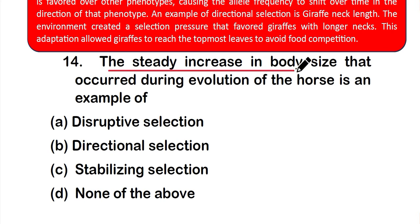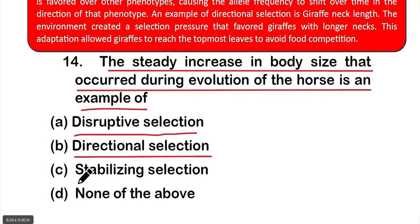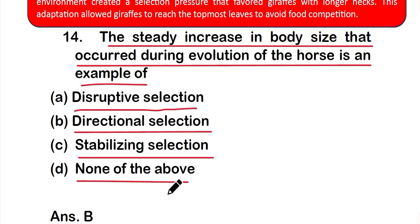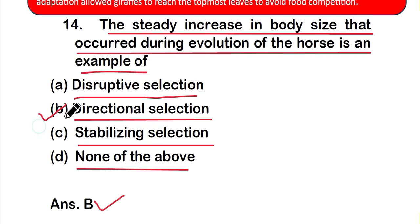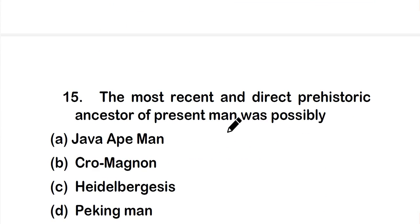Question 14: The steady increase in body size that occurred during evolution of the horse is an example of — option A: disruptive selection, option B: directional selection, option C: stabilizing selection, or option D: none of the above. The correct answer is option B — directional selection. The steady increase in body size during the evolution of the horse is an example of directional selection.